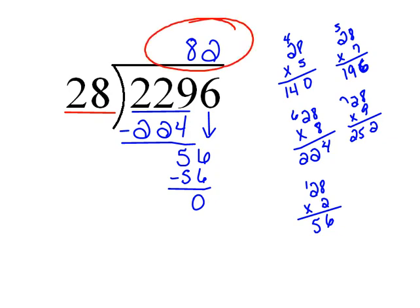So our answer is 82. Now we could always check that by going backwards. We could multiply 82 times 28. And in fact, we're running out of time, but if you wanted to multiply those together, you would in fact get 2,296. That's your check.